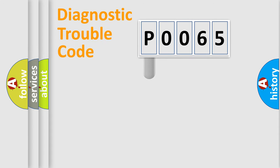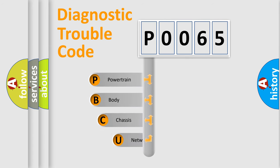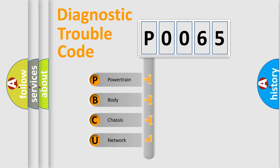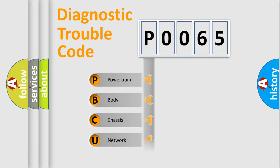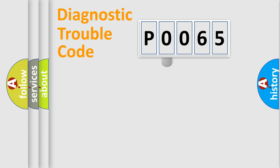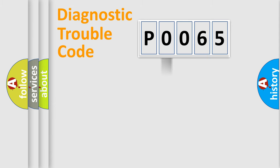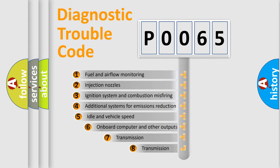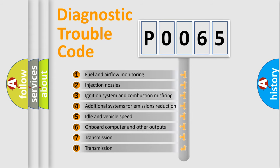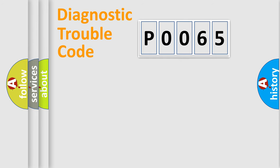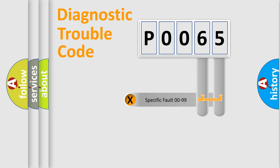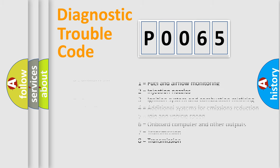Let's look at the history of diagnostic fault code composition according to the OBD2 protocol, which is unified for all automakers since 2000. We divide the electric system of an automobile into four basic units: Powertrain, Body, Chassis, and Network. This distribution is defined in the first character of the code. If the second character is zero, it is a standardized error. In the case of numbers 1, 2, or 3, it is a manufacturer-specific error. The third character specifies a subset of errors. This distribution is valid only for the standardized DTC code, and only the last two characters define the specific fault of the group.